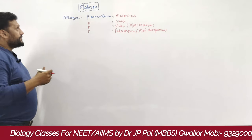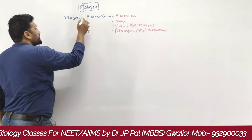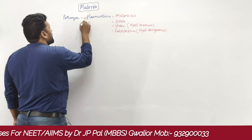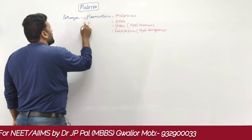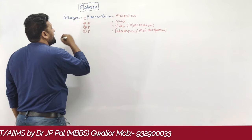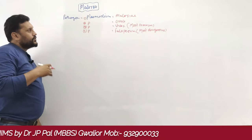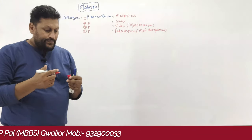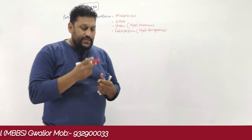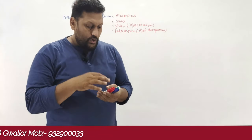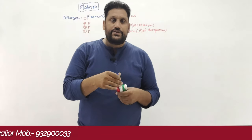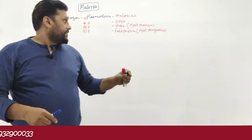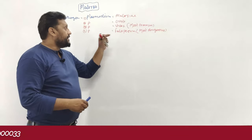So, Plasmodium has four species: number one Plasmodium malariae, ovale, vivax, and falciparum. Among these the most common is vivax, and the most dangerous is Plasmodium falciparum.